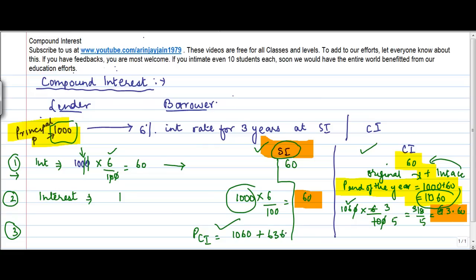Plus the interest accrued during the particular year. So this becomes 1120.60. To this you multiply by 6 divided by 100 and you get your interest number.